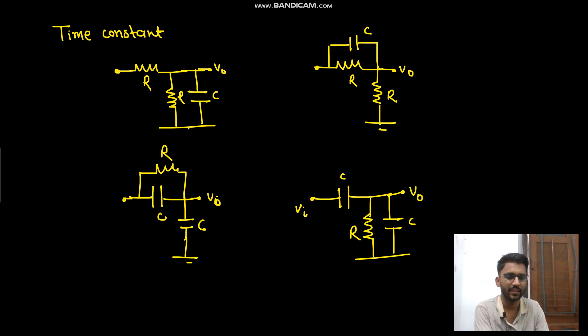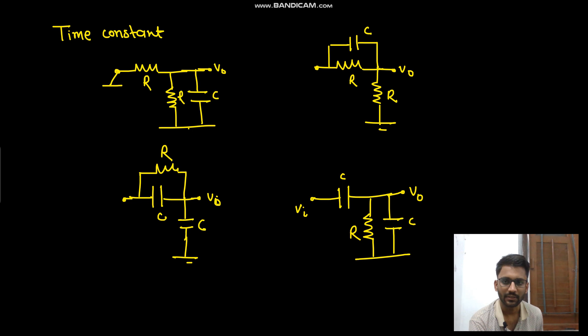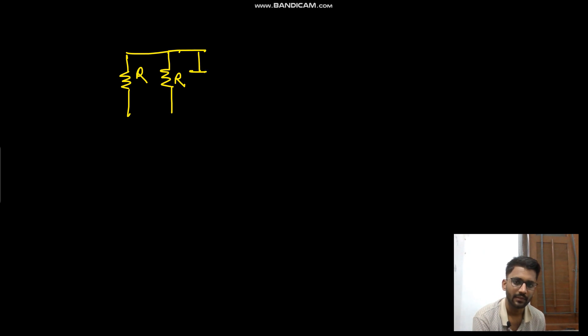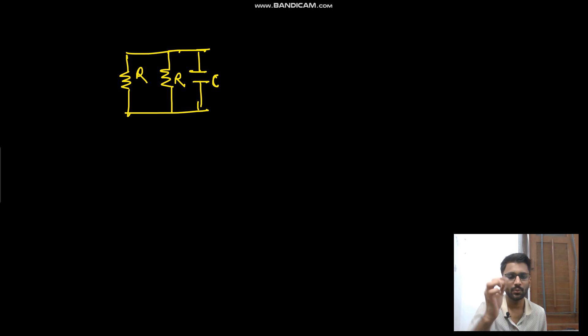Hello everyone. We will now see the time constant of RC circuits — this will be the last video in this lecture. For finding the time constant, what we will do is short-circuit the input. Taking example A first: this is your circuit with R, R, and C. Since the input is short-circuited, forget about V-naught — your task is to reduce the resistance and capacitance.